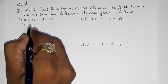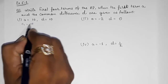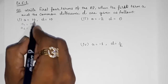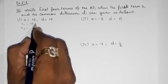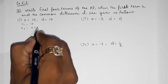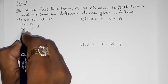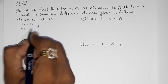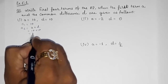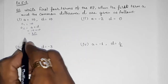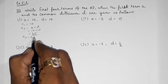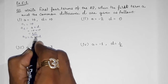First, we want to find a1, which is a only, so a1 = 10. For a2, we add the common difference, or use the formula a plus d. Using the formula: a2 = a + (n-1)d, with n=2, that gives 2 minus 1 = 1, so a2 = 10 + 10 = 20.